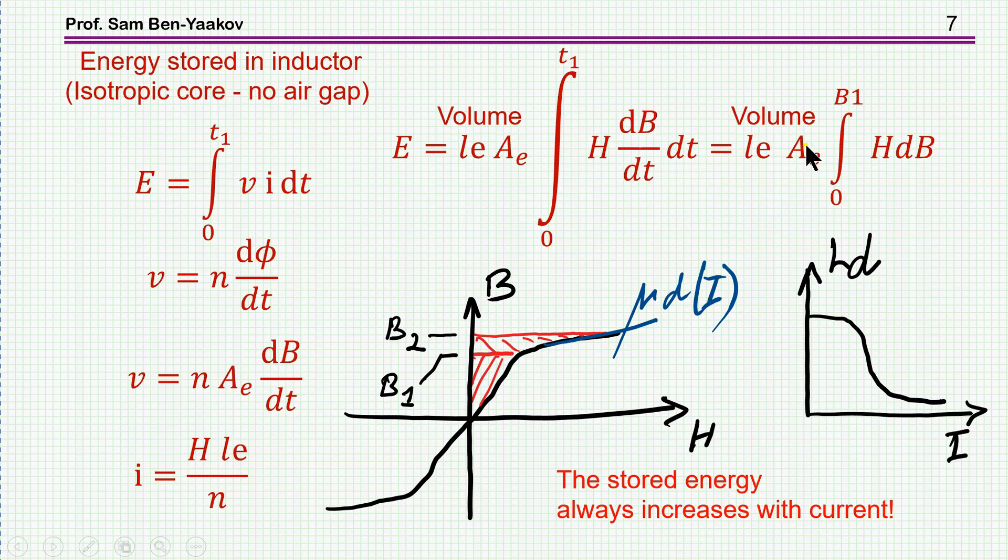Now, I can express this dB dt times dt as dB, which means that the energy is related to the area. This is area now, this area here, H dB from 0 to some B1. So, energy of the inductor is related to this area. If we have a higher current, which goes to a higher B, then this will be the area here. So, this means that when you go into saturation, in fact, energy still keeps going up, still increasing. There's no reduction of energy.